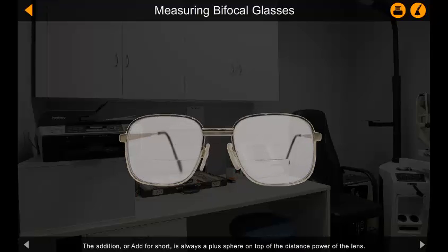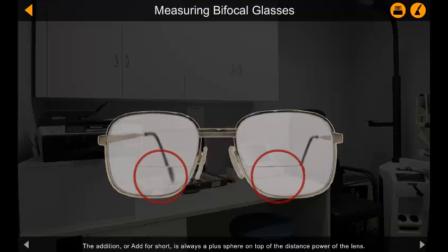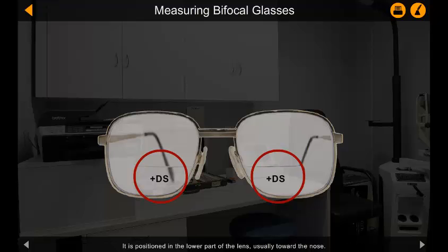The addition, or add for short, is always a plus sphere on top of the distance power of the lens. It is positioned in the lower part of the lens, usually toward the nose. It provides increased dioptric power for near-object viewing in cases where the eye cannot do this for itself.